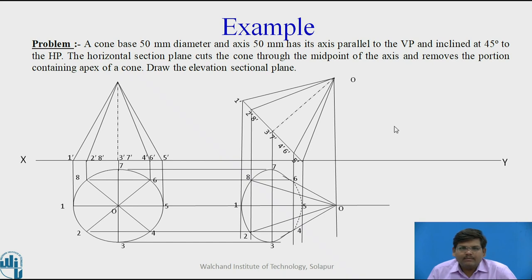Now let us move to the cutting plane. The horizontal section plane cuts the cone through the midpoint of the axis and removes the portion containing apex of the cone. So horizontal plane which is parallel to XY and it passes through the midpoint of the axis of the cone, cuts the cone by removing the apex part. So as it is suggested that the plane is horizontal, let us draw it in the front view. So this is the horizontal plane parallel to XY and passing through the midpoint of the axis, and this portion above the cutting plane is removed and the direction of observation will be this. So you will get the sectional top view.